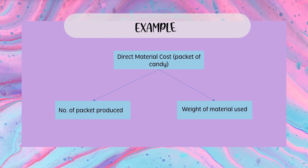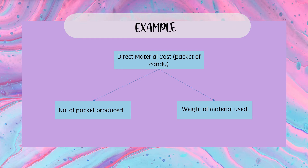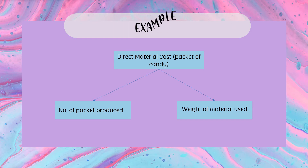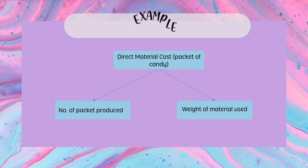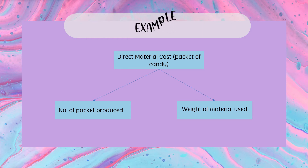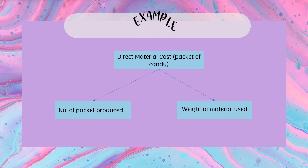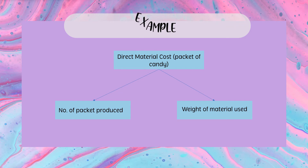For example, if you want to find a cost driver for the direct material of a packet of candy, there will be two possible cost drivers: the number of packets produced, and the weight of material used. It depends on the manager to decide and choose the best cost driver between the two.